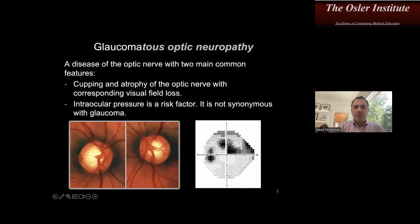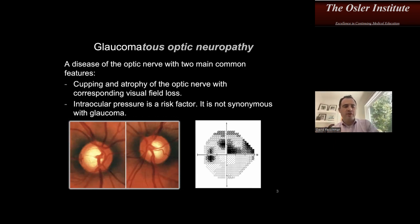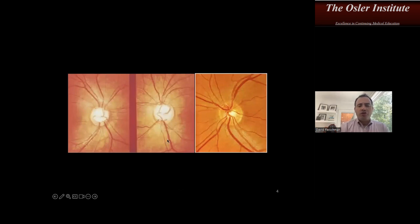Glaucoma can encompass ophthalmos and crisis events where pressure has gone up even though the optic nerve hasn't been damaged yet. But for the purpose of your exam, they'll talk about glaucoma as this optic neuropathy with a typical cupping pattern and atrophy of the nerve with corresponding visual field loss. Intraocular pressure is a risk factor — it is not synonymous with glaucoma. Many patients have terrible glaucoma despite pressures in the normal range.